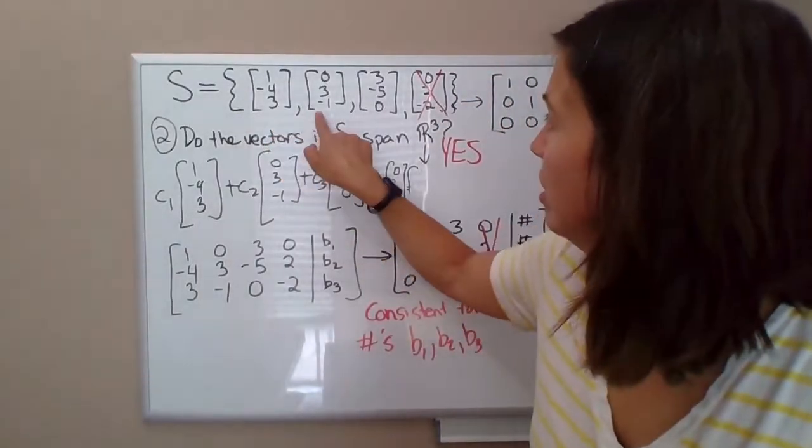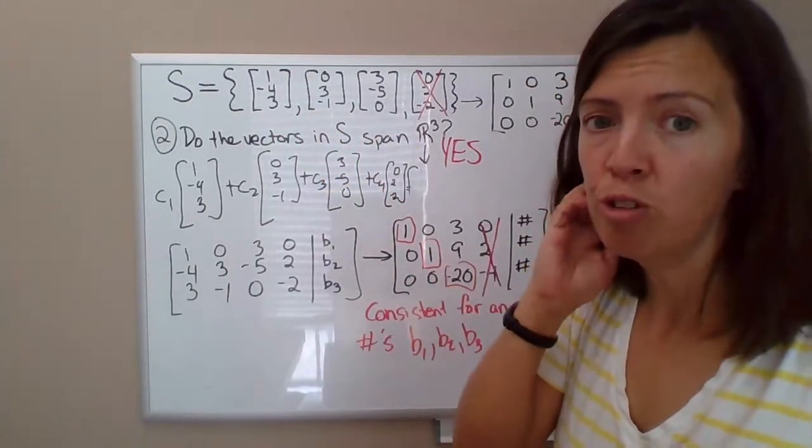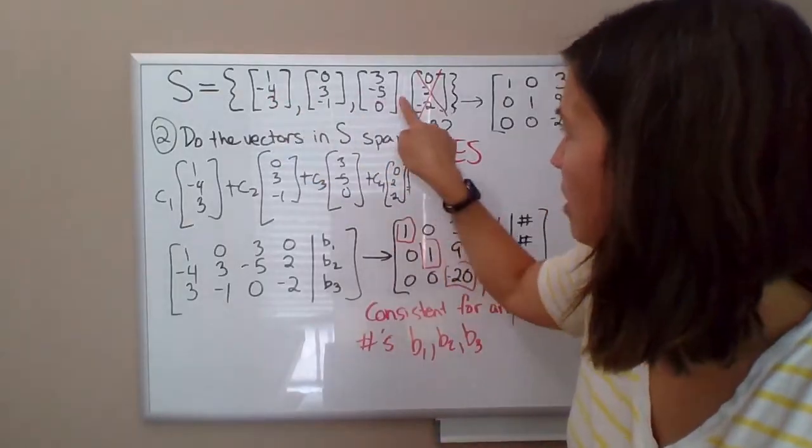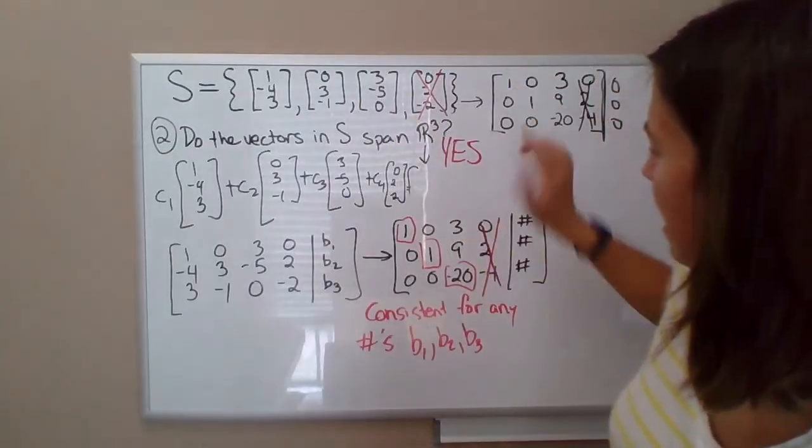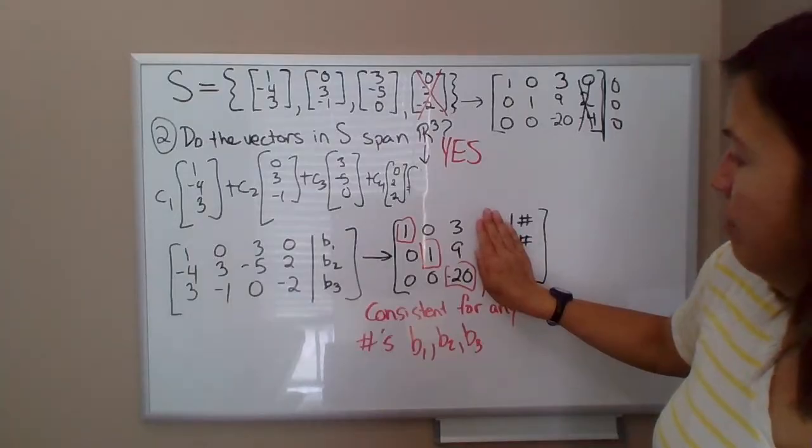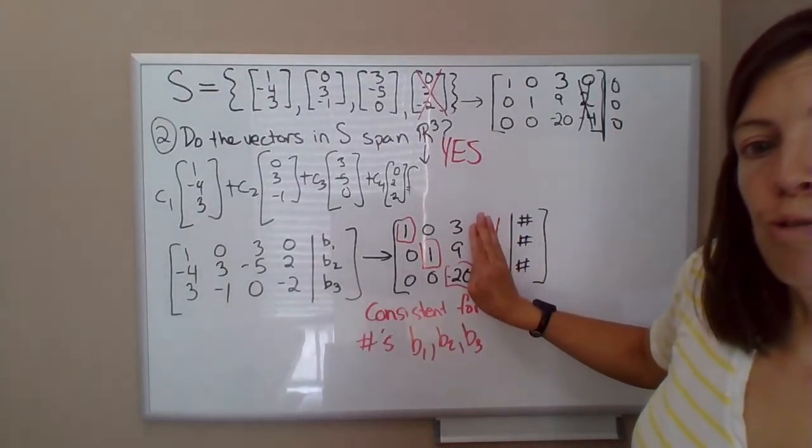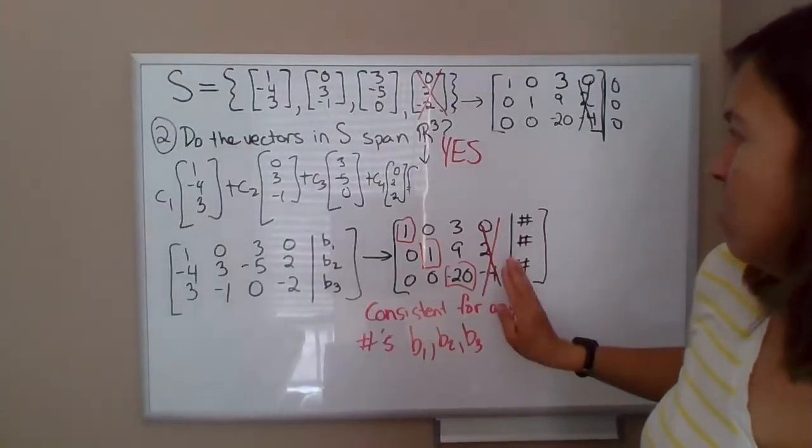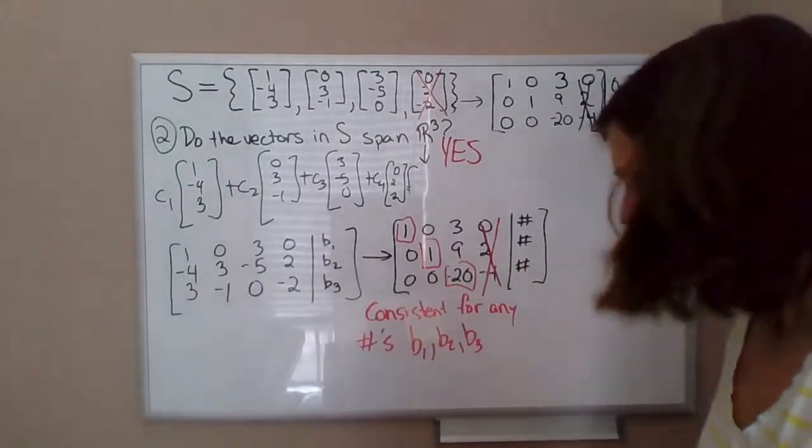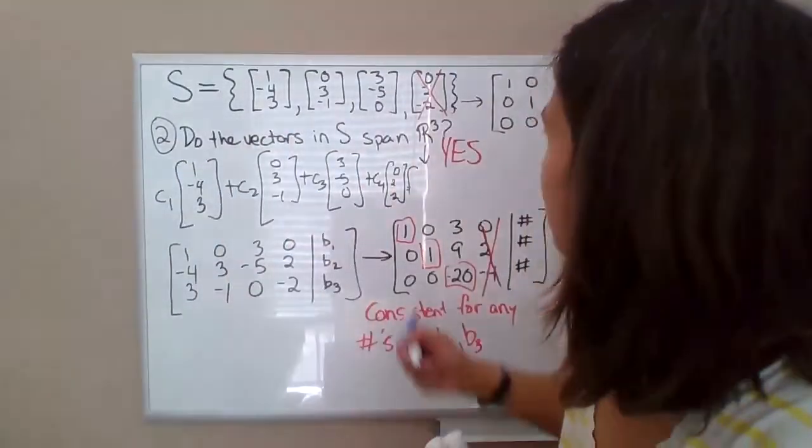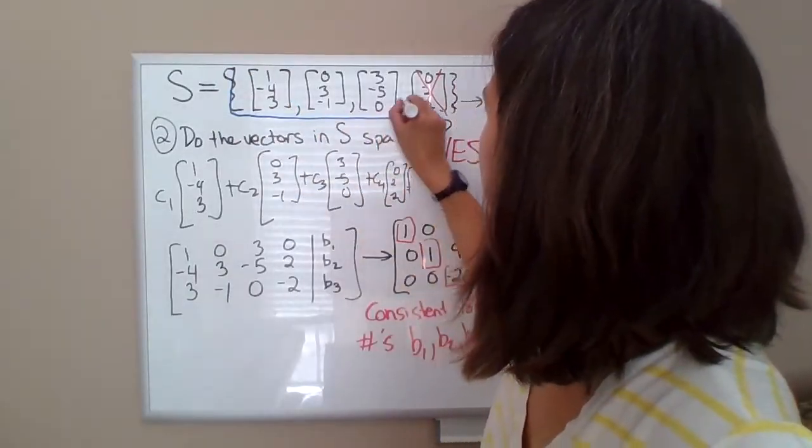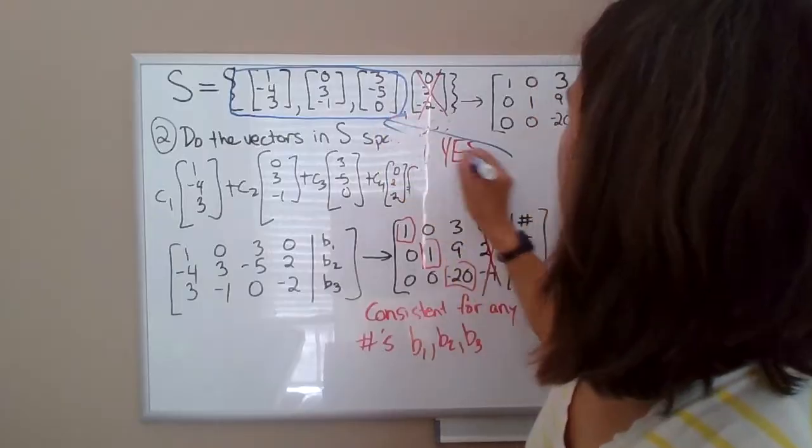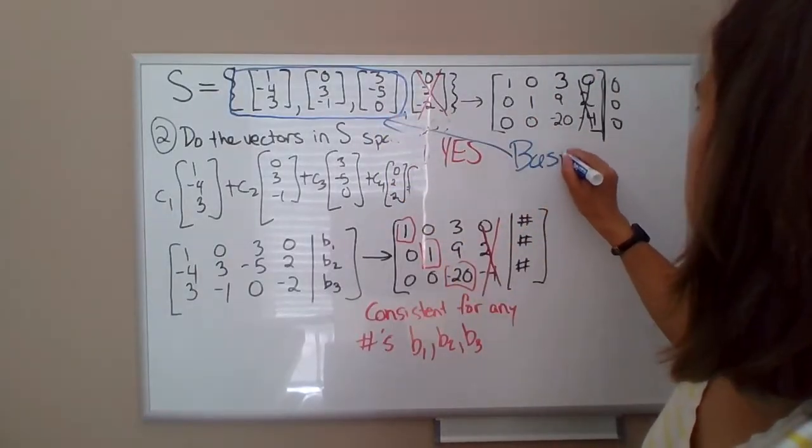This collection containing just the first three vectors is a basis for R³ because they are linearly independent. And if you just ignore the last column, they still do span R³. This thing is consistent no matter what numbers you put in the last column. So if we wanted to form a basis, that would be the way to do it. Just grab the first three and that's a basis.